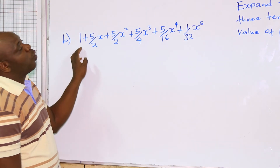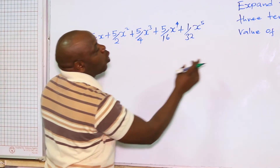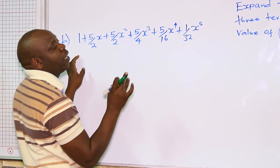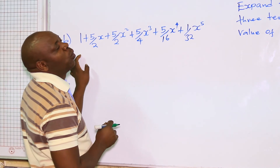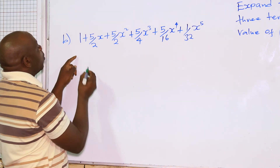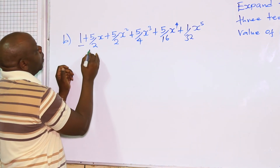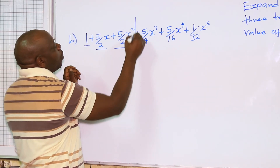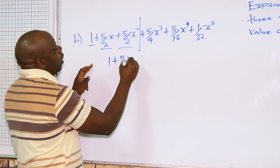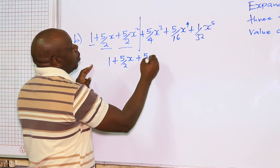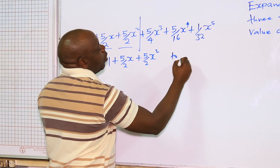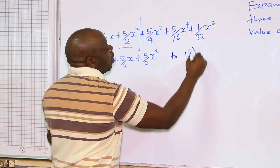Part B: after you have gotten the expansion of (1 + ½x)⁵, you have been told to use the first three terms to estimate the value of (1½)⁵. The first three terms are: 1 + 5/2 x + 5/2 x².